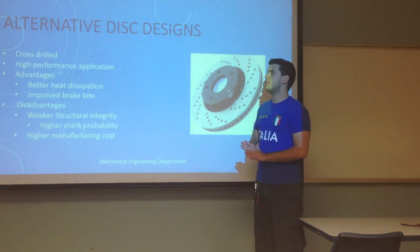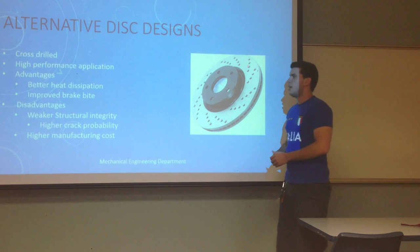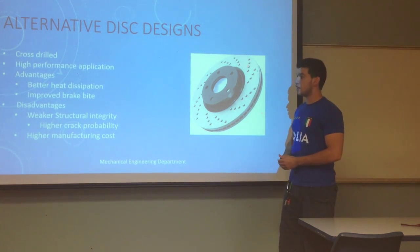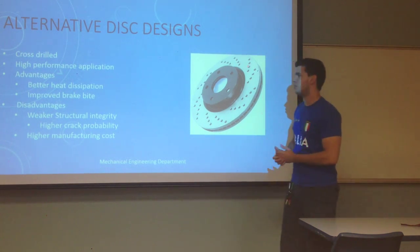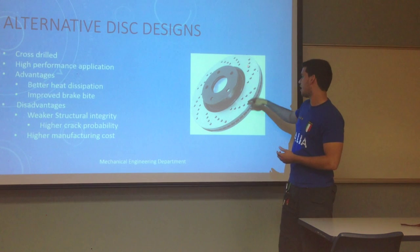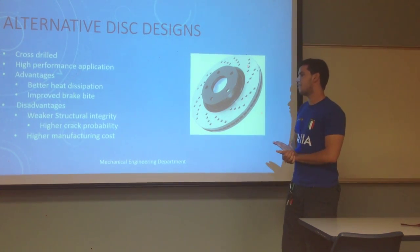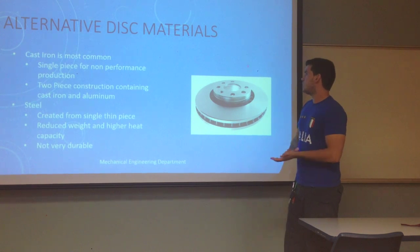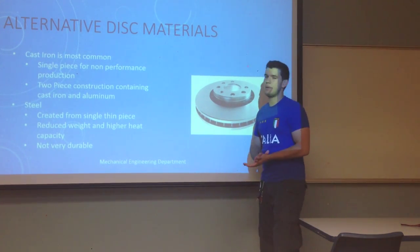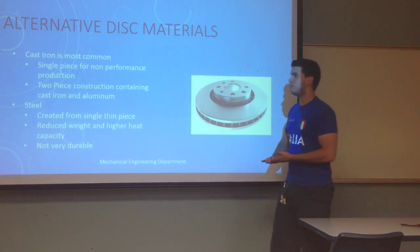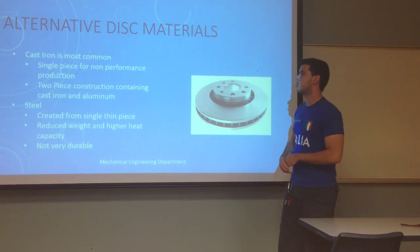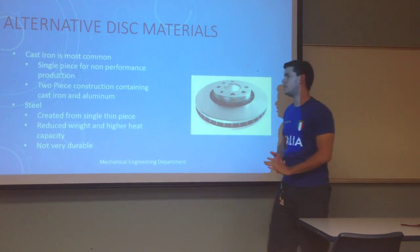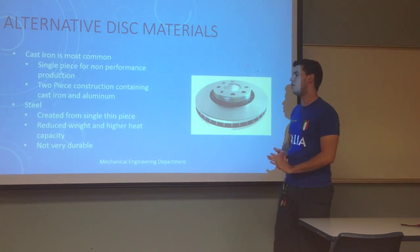Another alternative design is the cross-drilled rotor, found in most high-performance vehicles. The advantage is better heat dissipation due to complete drilling through, providing better ventilation, and improved initial brake bite of the pad into the rotor. The disadvantages are weaker structural integrity, higher crack probability, and higher manufacturing cost. Most discs are made out of cast iron — a single piece for non-performance production vehicles, and a two-piece construction with cast iron and aluminum for higher-performance vehicles. Steel is also used, created from a single thin piece, offering reduced waste and higher heat capacity, although it's not very durable.